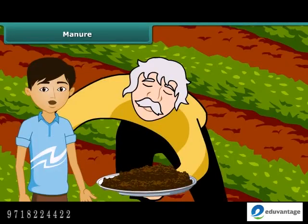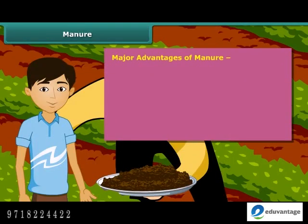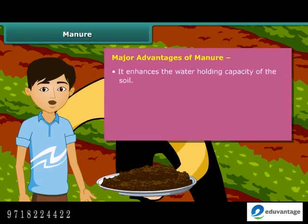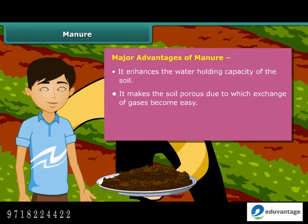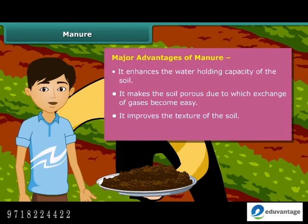Let us look at some of the major advantages of organic manure. Manure enhances the water-holding capacity of the soil. It makes the soil porous, due to which exchange of gases becomes easy. It improves the texture of the soil. It also increases the number of friendly microbes necessary for a healthy crop.